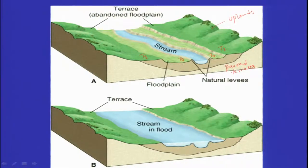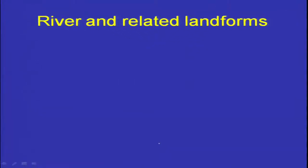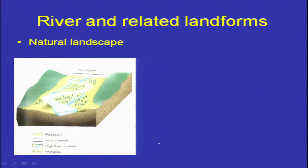This type of mapping, which you can extensively do using high-resolution satellite data to prepare a detailed fluvial geomorphic map, will help in also designating the areas which will be affected by floods or during peak flooding conditions. Rivers and related landforms we have considered include meandering rivers, point bars, braided rivers, braid bars, and terraces.